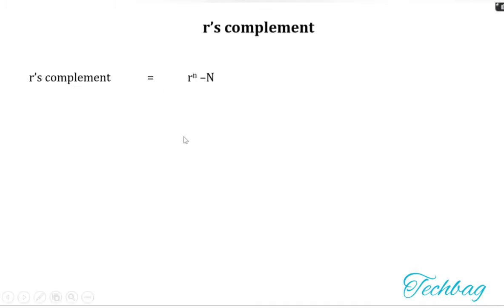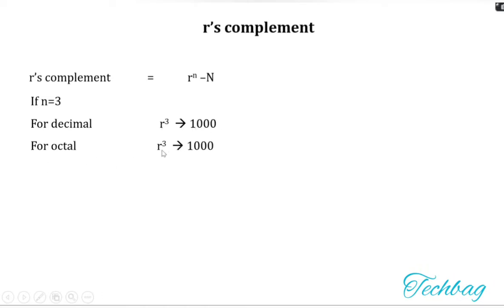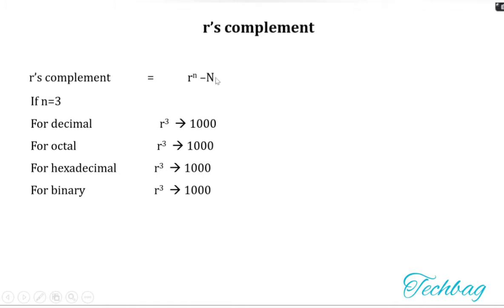For R's complement, if n equals 3, then R^n equals 1000 in every number system (decimal, octal, hexadecimal, and binary). So if the number of bits is 3, you subtract your number from 1000 to get R's complement. However, this involves a borrow operation, as shown with 2's complement of 101: subtracting 101 from 1000 requires borrowing, making the computation more complex. So we prefer the alternate method.